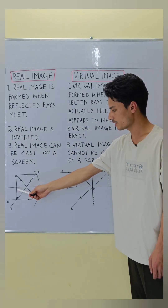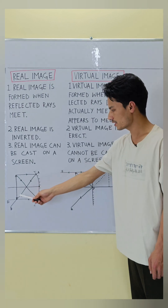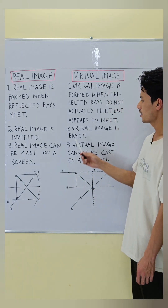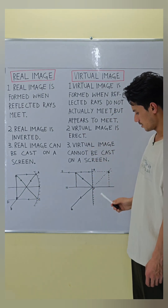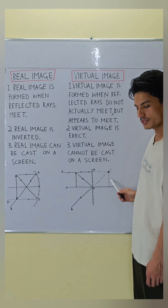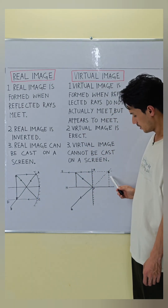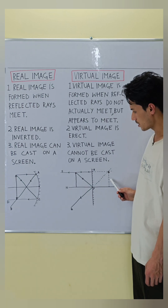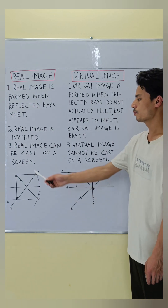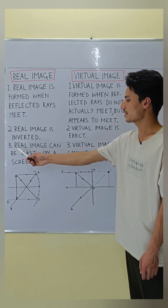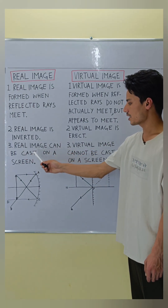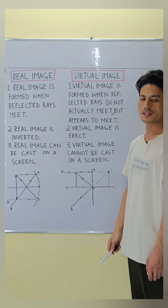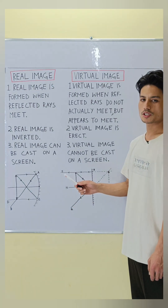Real image, point number two: a real image is inverted, as you can see in the ray diagram. Virtual image, point number two: a virtual image is erect, as you can see in the ray diagram.